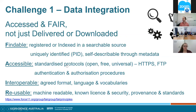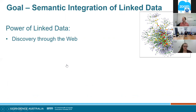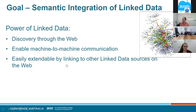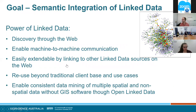This is the link to the FAIR principles for people who want to learn more. Our goal is semantic integration of linked data — data available on the semantic web. The power of linked data is that we can discover it through the web, it enables machine-to-machine communication so data integration can be achieved quickly and at large scale, it's an extendable system using semantic web capabilities, and it enables consistent data mining of multiple spatial and non-spatial data through GIS software for open data.